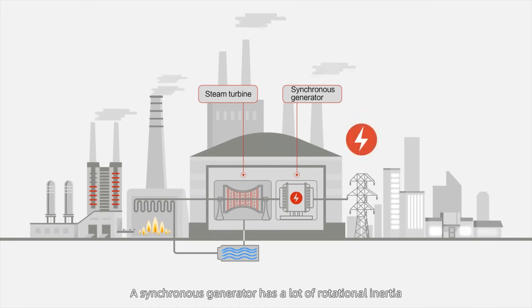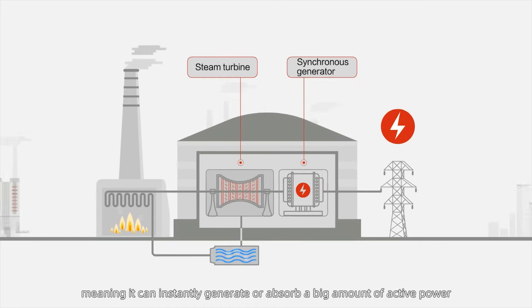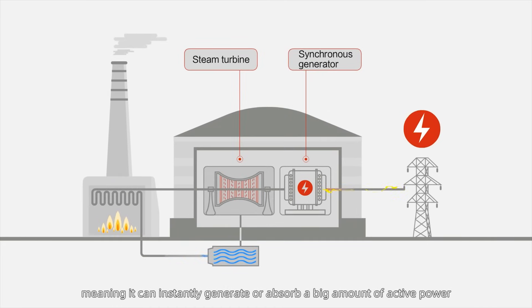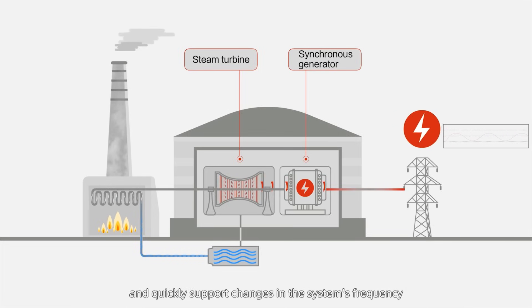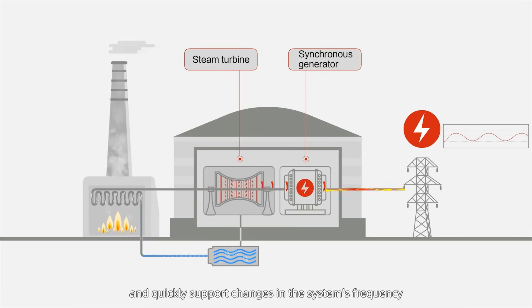A synchronous generator has a lot of rotational inertia, meaning it can instantly generate or absorb a large amount of active power and quickly support changes in the system's frequency.